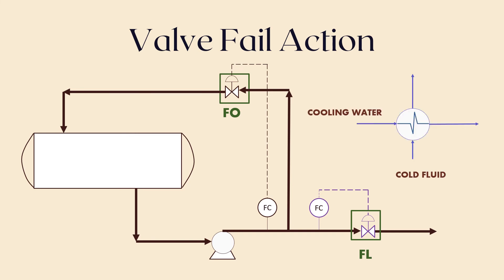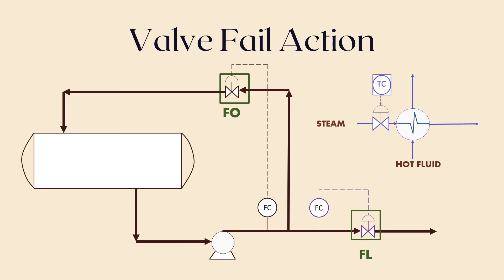Another example of fail open position can be in a water cooler. If the instrument air is cut from the control valve controlling the water flow, we would need to ensure that the hot fluid will still be cooled, so we shall consider the valve to be fail open as this would be the fail safe position. However, if the fluid is heated by steam, the case would be different — if the valve was left to be fail open, overheating the fluid would be a safety issue in most cases. That's why in this case the valve would be fail closed.